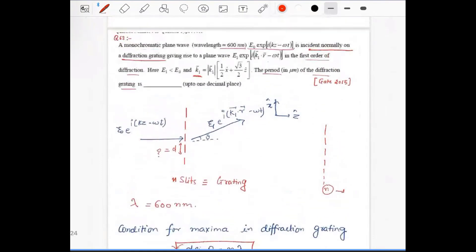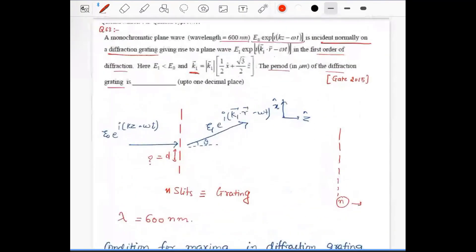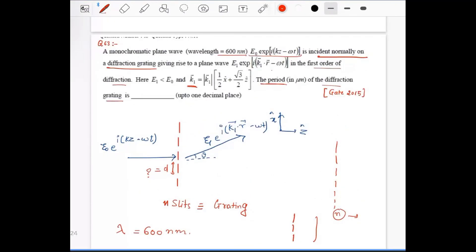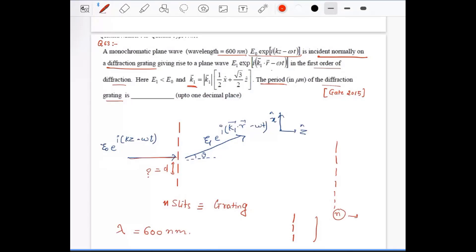I just use it directly here. The concept is we have to find what is the period of diffraction grating. You have a wave which is incident normally onto this diffraction grating, and in first order it goes in this direction.